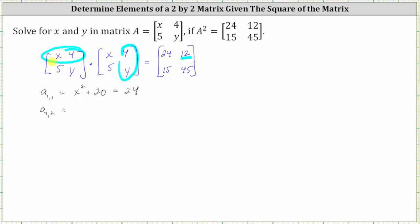This gives us x times four, or four x, plus four times y, or four y must equal 12.